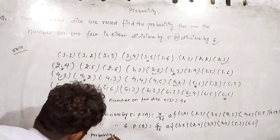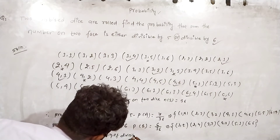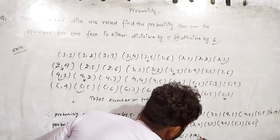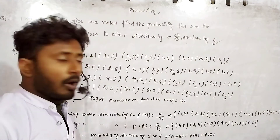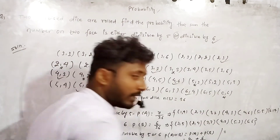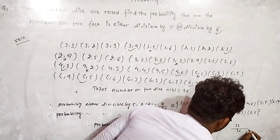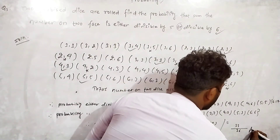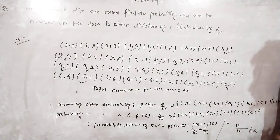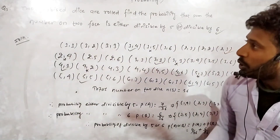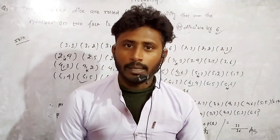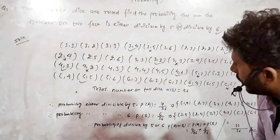So P(A or B) = P(A) + P(B) minus P(A and B) = 7/36 + 6/36 minus 0 = 13/36. The answer is 13 by 36. The answer in our book, United Publication, is wrong. The correct answer to this unseen question is 13 by 36. I hope you liked it. Thank you, see you in the next video.